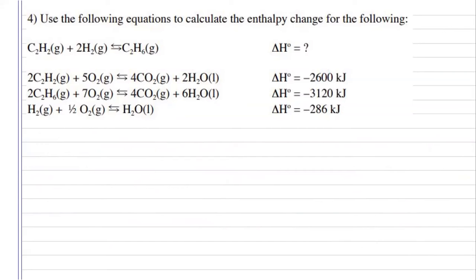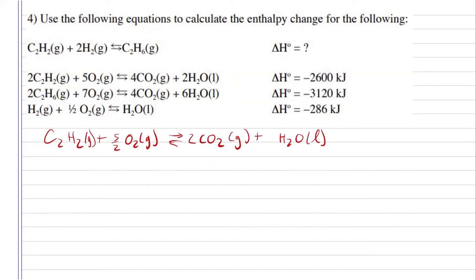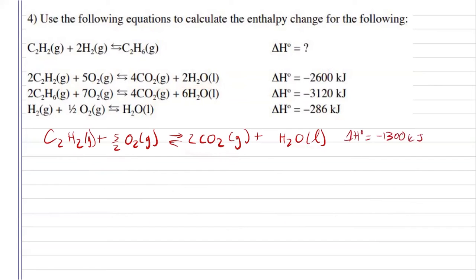For number four, let's see how we can manipulate our reactions. Looking at my first reaction, I have two moles of C2H2, but the reaction only wants one mole. So I'm going to divide this one by two. Doing that, I get one mole of C2H2. Since I originally had five moles of oxygen, I have five over two. Instead of having four moles of CO2, I have two. And instead of having two moles of water, I'm only going to have one. So I can divide my enthalpy by two — I get negative 1,300 kilojoules.